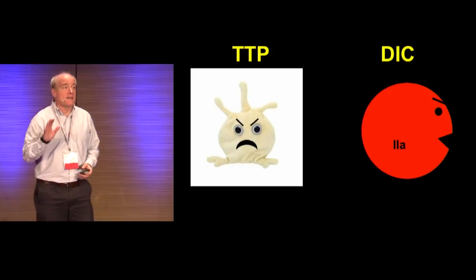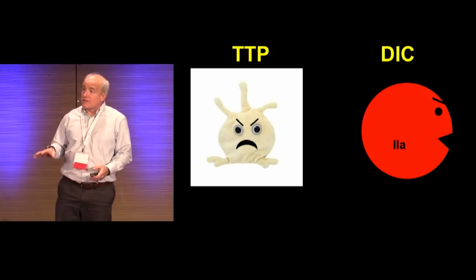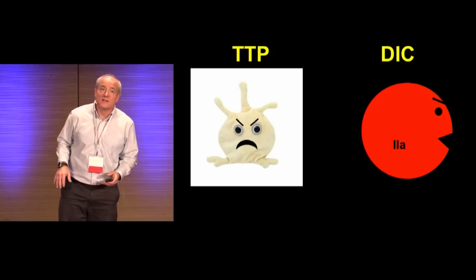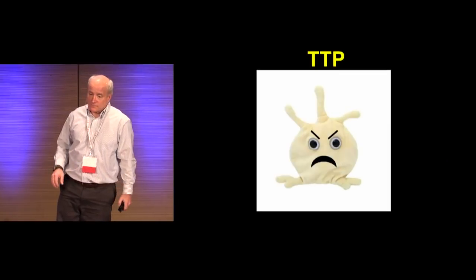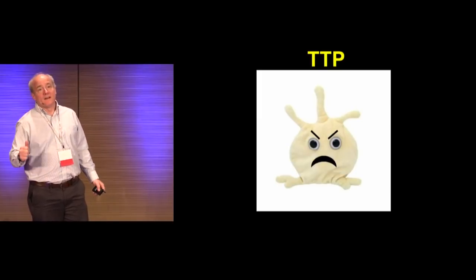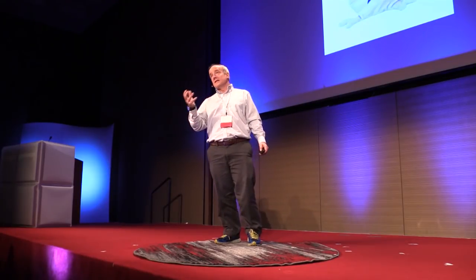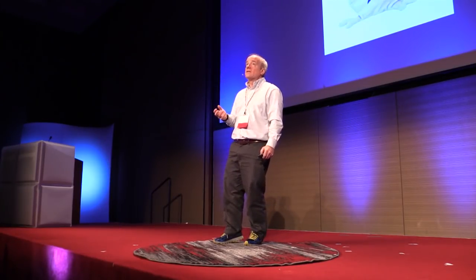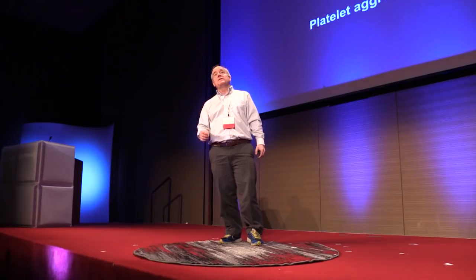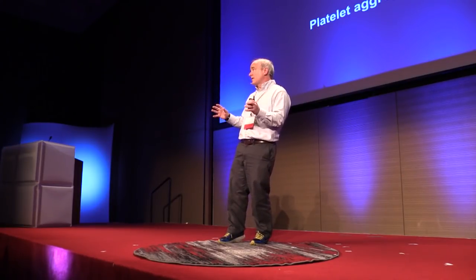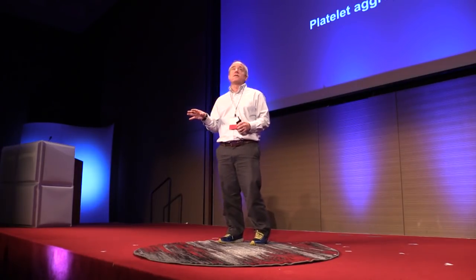TTP is a disease of platelets — I have Mr. Angry Platelet here to help me. And for DIC, it's a disease of thrombin generation, which I realize brings back bad medical school memories, and we'll go through that. TTP is a disease of overactive platelets. Platelets are the cells that normally glom together, form the initial platelet plug, and provide primary hemostasis. In TTP, your platelets literally start to spontaneously aggregate, to clump up in every little vessel, and this is really what causes the pathophysiology of TTP.